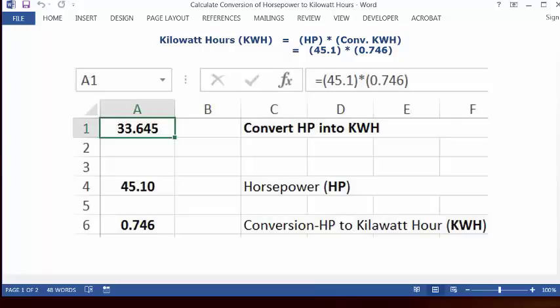Then you can type in the formula bar the following formula: equal sign, open parenthesis, 45.1, close parenthesis, multiplication key, open parenthesis, 0.746, close parenthesis, and then press enter.